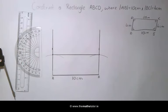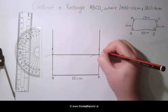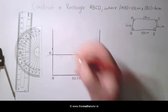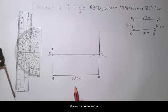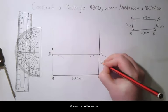And here we have our rectangle ABCD where AB is equal to 10cm and BC is equal to 4cm.